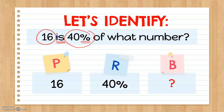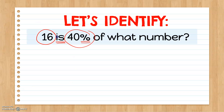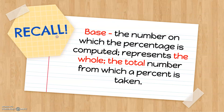So what's missing here is the base, because the problem is asking us to find the number of students in Mrs. Santos' class — that's the whole — therefore what's missing is the base. Again, the base is the number on which the percentage is computed, represents the whole, and the total number from which a percent is taken.